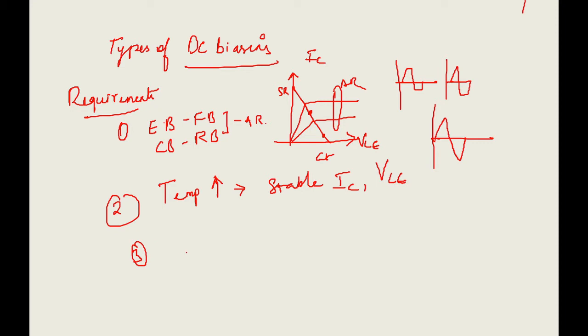The third important requirement is that the operating point — the Q-point — should be independent of transistor parameters. This is a key requirement of biasing circuits. Now we will see the types of biasing circuits to be discussed in today's lecture.